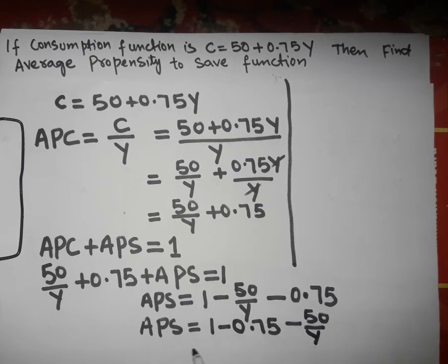Now, 1 minus 0.75 equals 0.25, so APS equals 0.25 minus 50 over Y. This is our average propensity to save function, which we have calculated from the given consumption function.